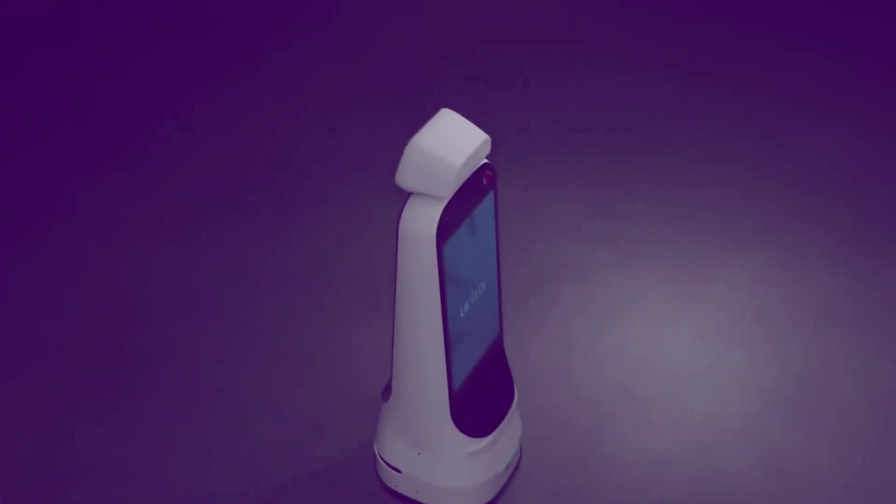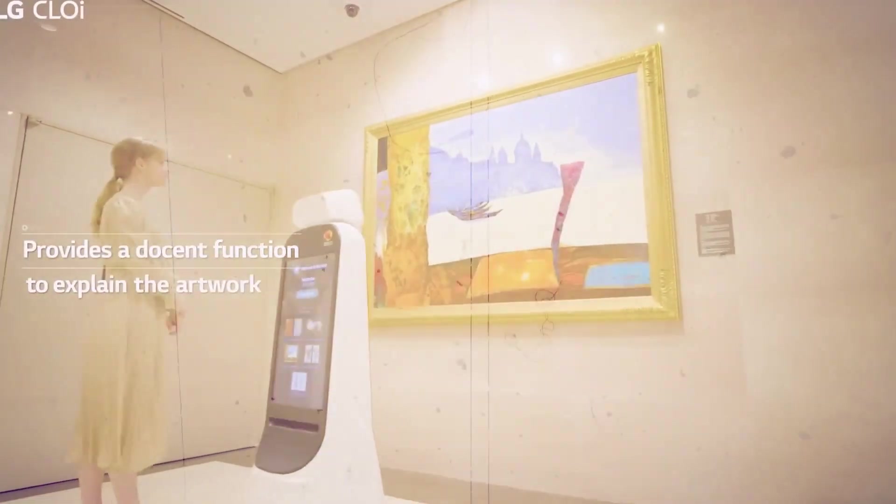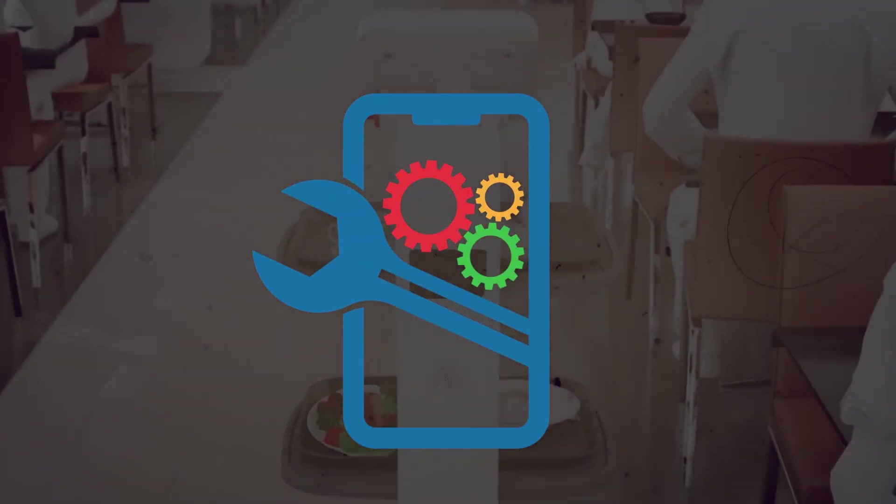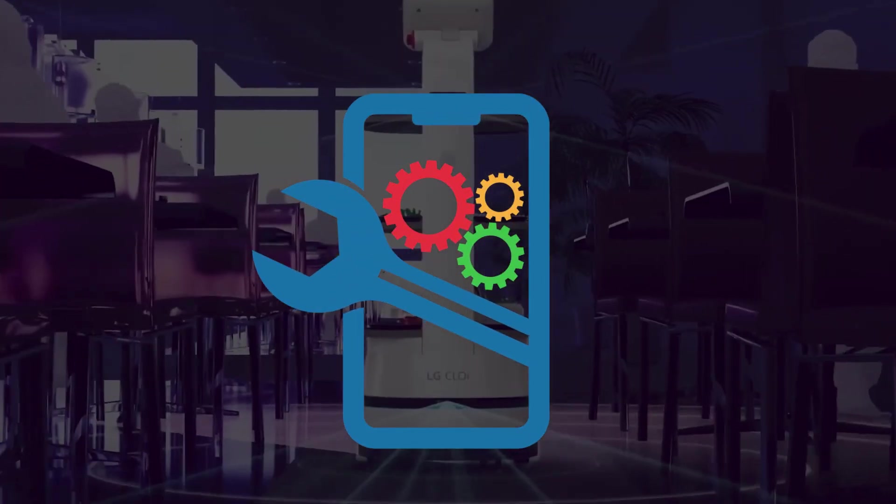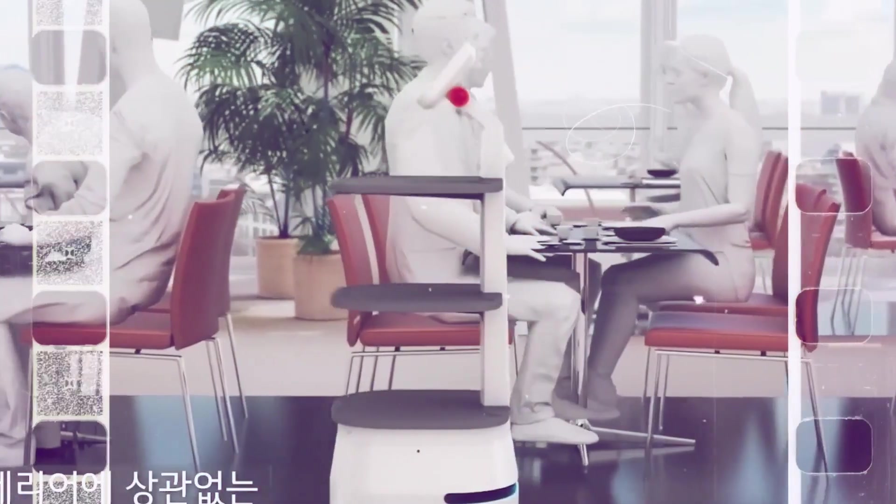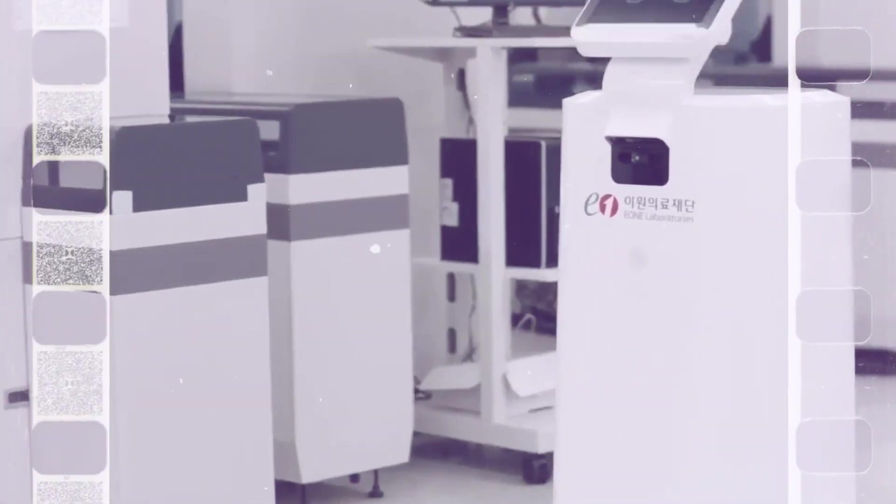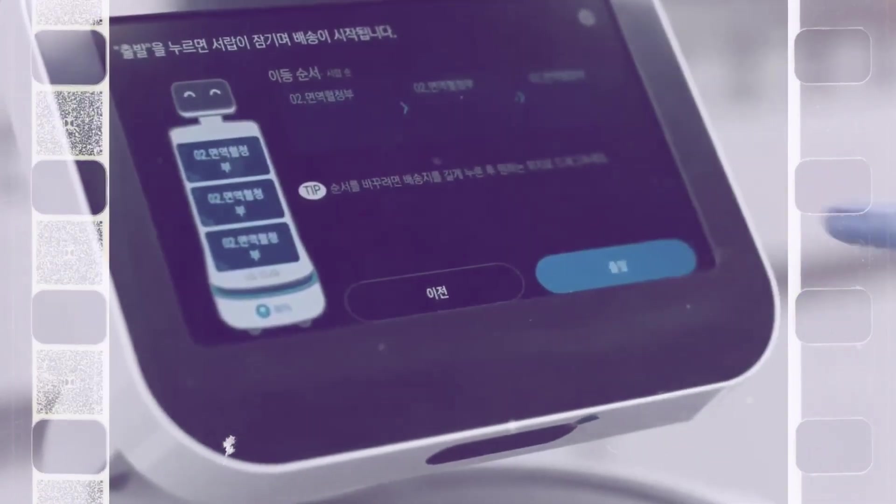LG introduced its Chloe Robot lineup featuring the Chloe GuideBot and SurfBot. Chloe GuideBot serves as an information stand, mobile advertising device, and even a security guard. SurfBot is an autonomous stack of three shelves or drawers that can be programmed to move to three destination points with a load capacity of up to 17 kilograms. These robots are perfect for various industries, from hospitality to healthcare.